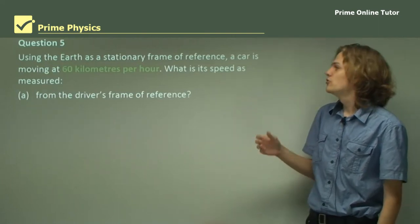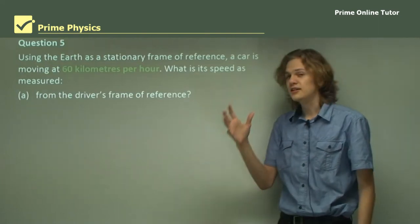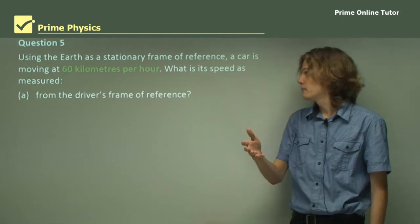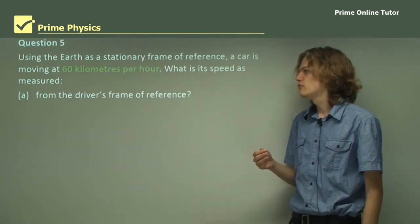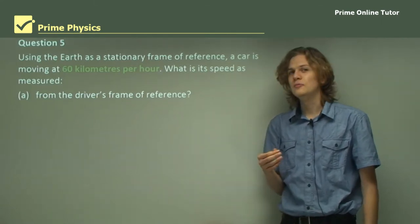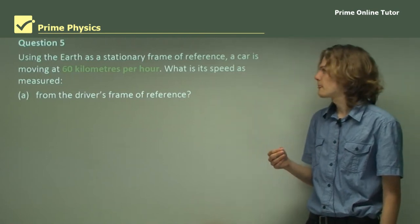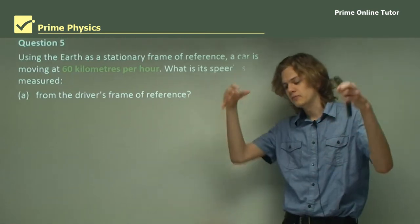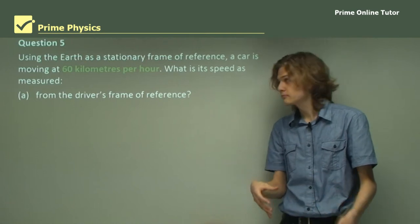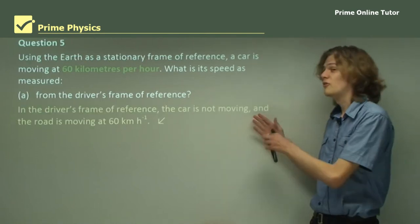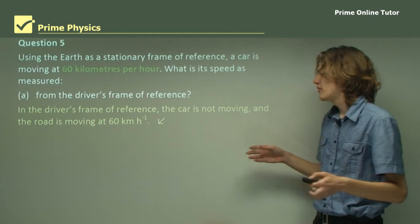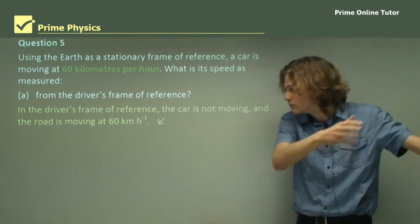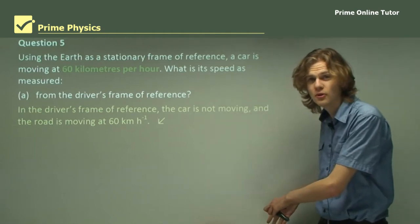Question 5. Using the Earth as a stationary frame of reference, a car is moving at 60 kilometers per hour. What is its speed as measured from the driver's frame of reference? From the driver's frame of reference, we say that the car he's in is stationary. So the car isn't moving — rather, it's the road outside that's zooming past him at 60 kilometers per hour.